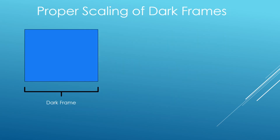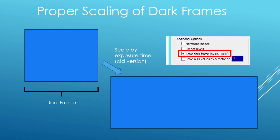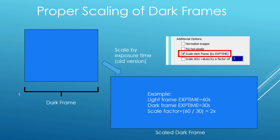The other item I want to talk about is the scaling of dark frames. In the old version, and also in the new version, you have this option where you can scale the dark frame by exposure time. What that is doing is it's looking at the exposure time of the light frame compared to the exposure time of the dark frame. It then computes a scaling factor, and the way this worked in the old version is that it would simply scale the entire dark frame by that factor.